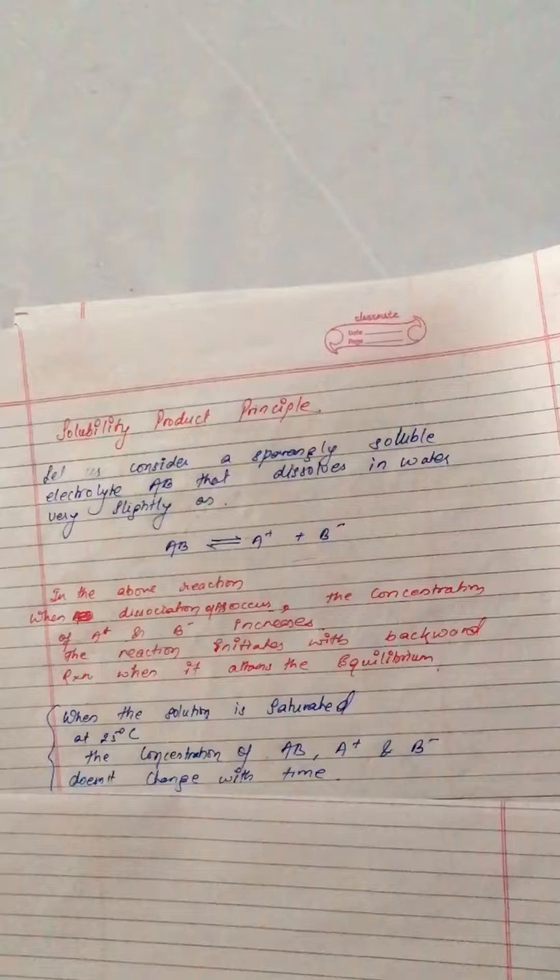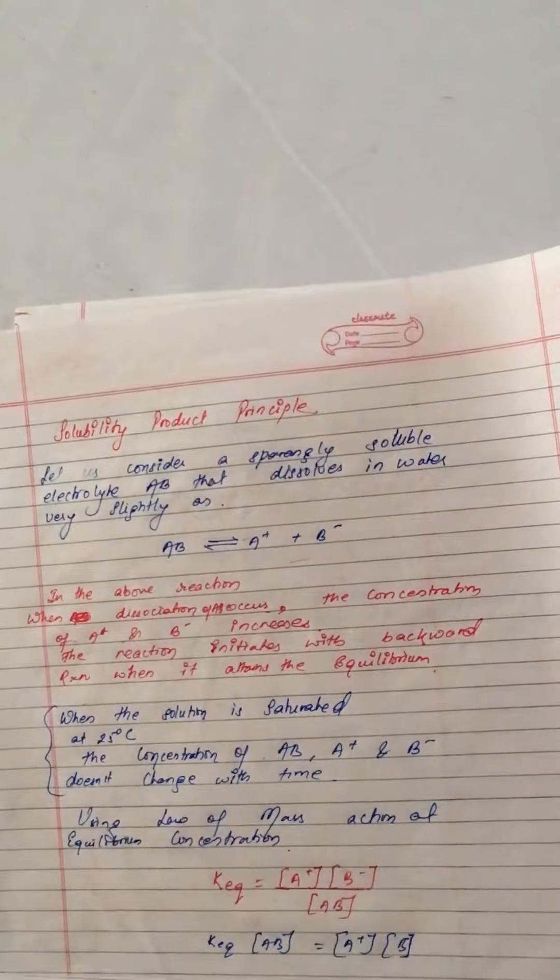When the solution is saturated at 25 degrees centigrade, the concentration of AB, A plus, and B minus does not change with time.